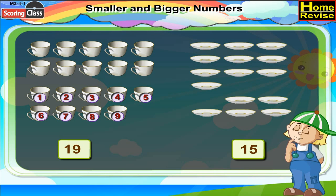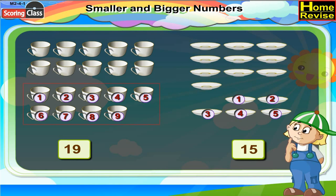Now let us count the remaining saucers: 1, 2, 3, 4, 5. Five saucers are remaining. Now, 9 is bigger than 5, which means 19 is bigger than 15.